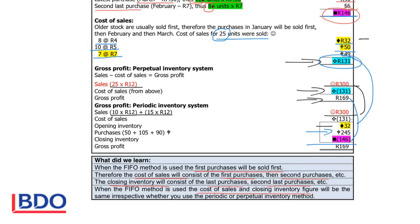Because you don't calculate the figures every time in a periodic system — you only do a calculation at the end of the year — but since you apply the same method where the first purchases are sold first and the last purchases form part of the closing inventory, you will get exactly the same results using the FIFO method whether you use the periodic or the perpetual inventory system.